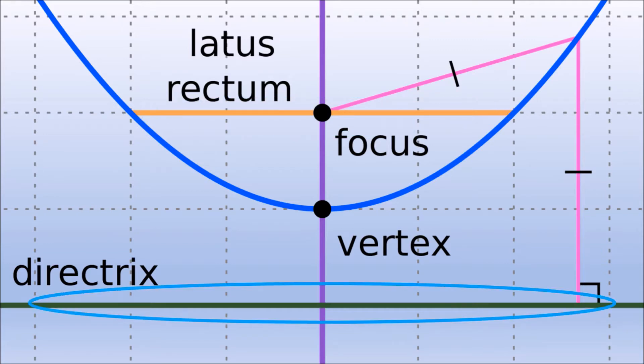Directrix is a fixed line situated at the back of the parabola. This line is perpendicular to the axis of symmetry. The directrix is located opposite the vertex at exactly the same distance between vertex and focus.